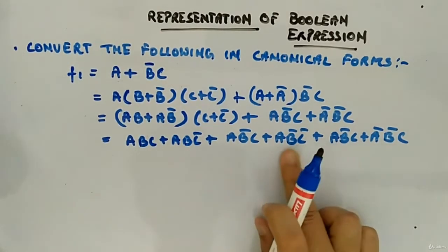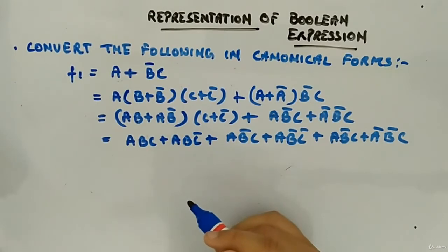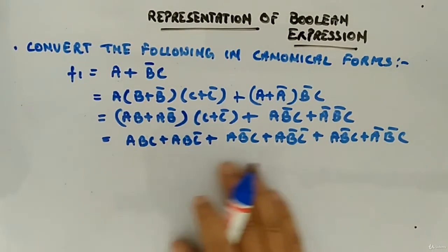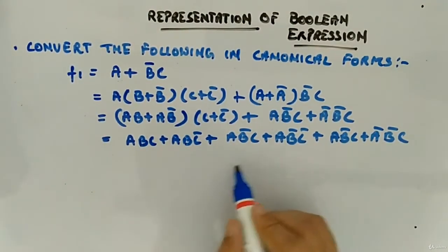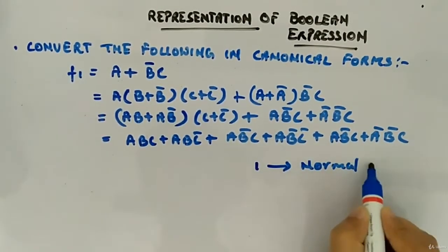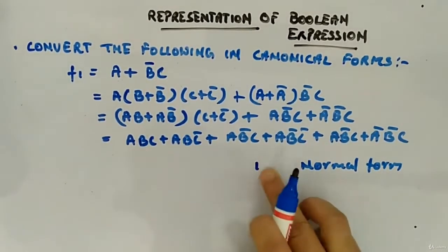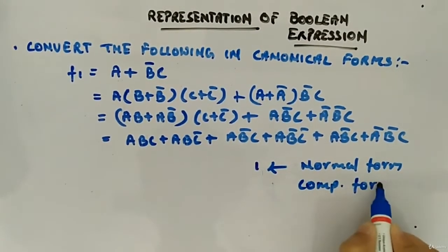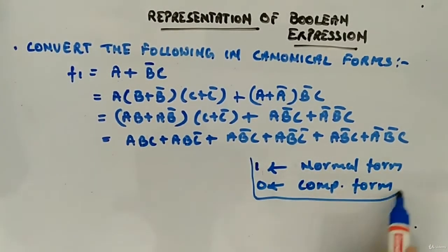Once you will get this expression, there is something called minterm which you can see. Now what we will do, we will make the minterms. So here what we are following: one will be represented as normal form, which means normal form is represented as one, and complemented form will be represented as zero. This is what we will follow.